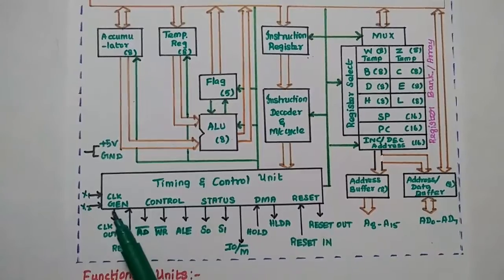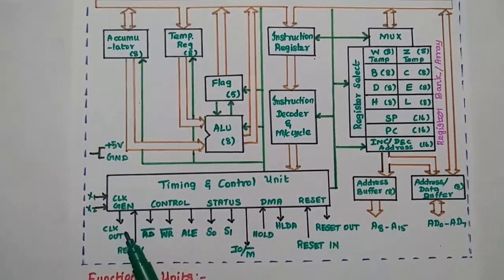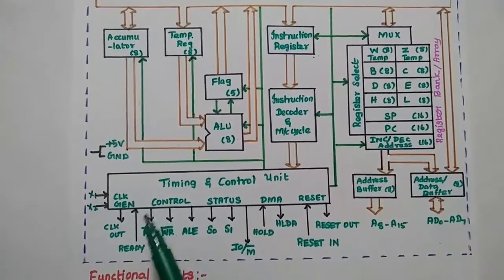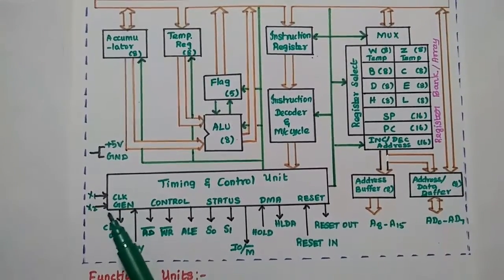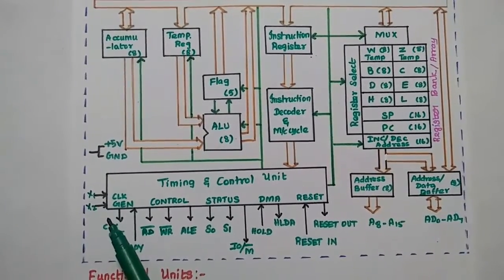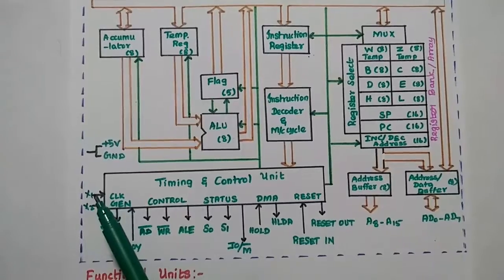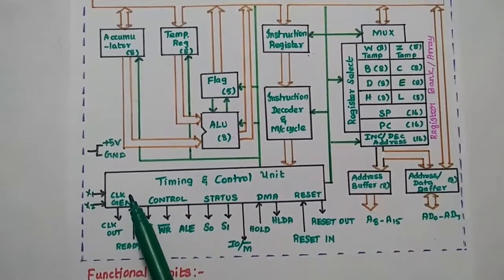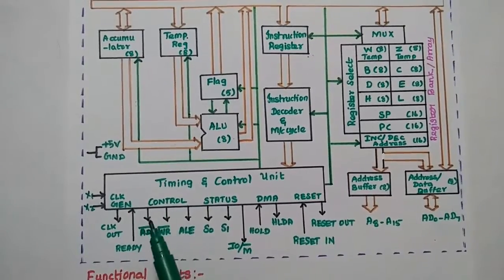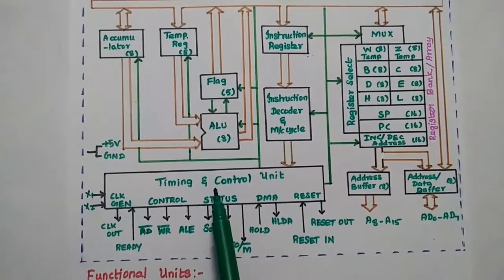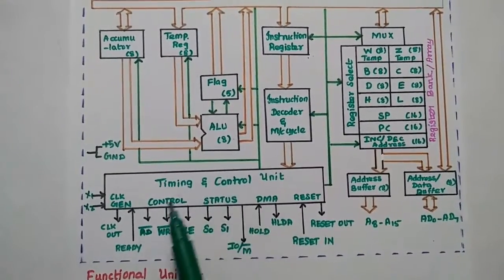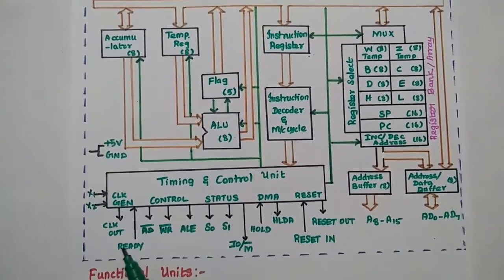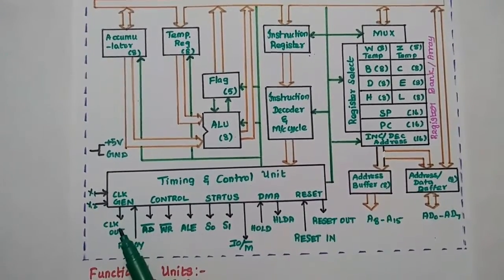The timing and control unit also includes reset signals. The 8085 requires a 3 MHz system clock, which can be generated using a crystal oscillator connected between pins X1 and X2. If another device is connected to the CPU, the clock signal can be sent to that device using the clock-out pin.